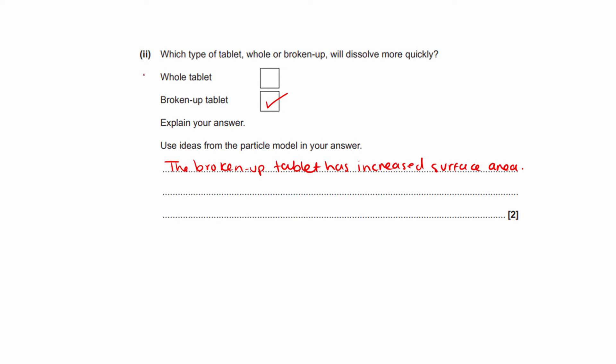Okay, so if you think about it, this is your whole tablet, and then the smaller one, it's got lots of different pieces. So there's more surface area exposed to the surrounding. For your second mark, you need to say what that does. So that increased surface area allows more successful collisions to happen. The difference between a successful collision and a normal collision is that a normal collision is just the particles bump into each other, and they bounce off each other. There's no reaction. A successful collision is when they bump into each other, and they bring about a reaction.